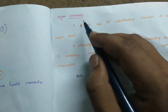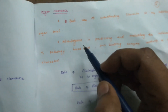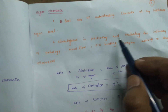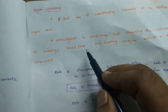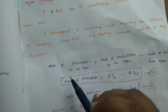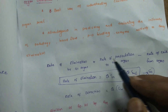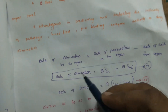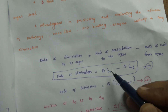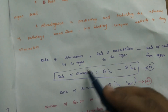Another method to find organ clearance is advantageous in predicting and evaluating the influence of pathology of a particular organ — blood flow, protein binding, enzyme activity, and drug elimination. Rate of elimination by an organ equals rate of presentation to the organ minus rate of exit from the organ. Therefore, rate of elimination equals Q × Cin − Q × Cout, where Q is the blood flow to that particular organ.